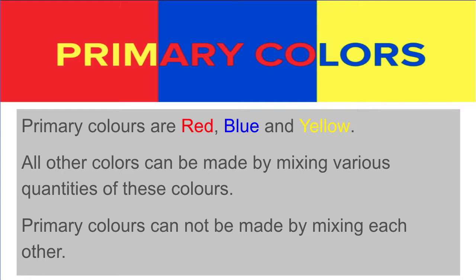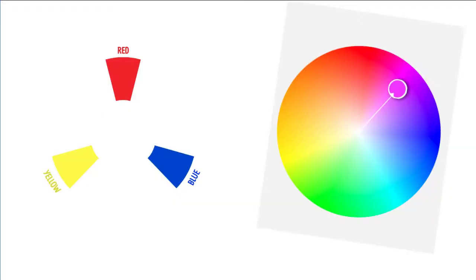All other colours can be made by mixing various quantities of these colours. Primary colours cannot be made by mixing each other, so red, blue and yellow are unique colours. When you refer to the colour wheel you'll actually notice that red, yellow and blue are distinct within the wheel. These primary colours, in various quantities, make up the rest of the colours in the colour wheel.